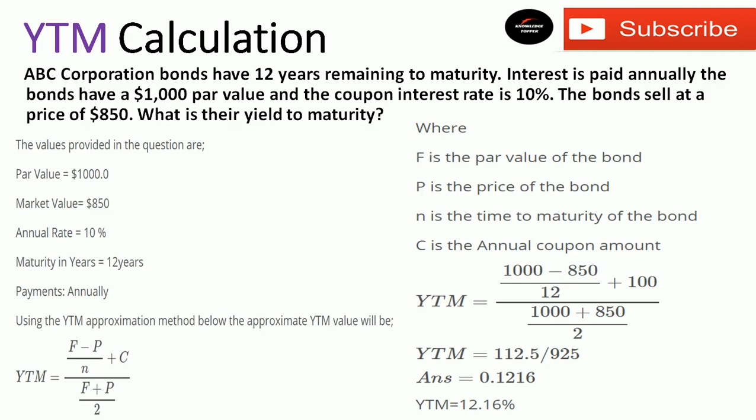Using the YTM approximation method, the formula is: YTM = [ (F − P) / N + C ] / [ (F + P) / 2 ], where F is the face (par) value of the bond — here $1,000 — P is the price of the bond — here $850 — N is the time to maturity — here 12 years — and C is the annual coupon payment — here $100.